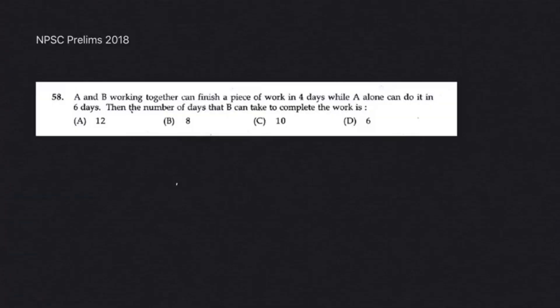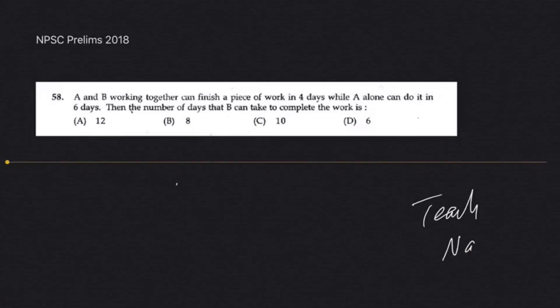Now let us try to solve question number 58. Question 58 states: A and B together can finish a piece of work in 4 days.